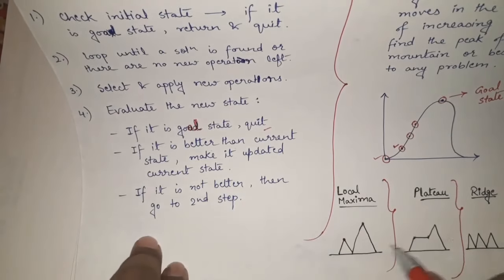The third limitation is ridge. As shown in the figure, hills of equal height are present. When the algorithm is applied, it identifies all these peaks as maximum points and gets confused about which one is the actual goal state. The algorithm may fail because it cannot determine which state to treat as the goal. So local maxima, plateau, and ridge are the three main limitations of the hill climbing algorithm. If you liked the video, please subscribe and share, and ask any doubts in the comments.